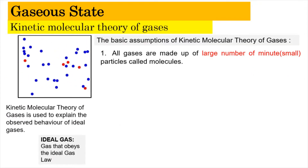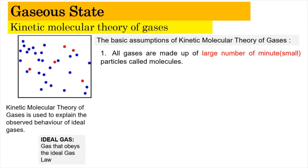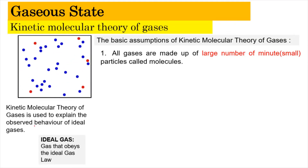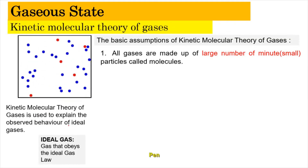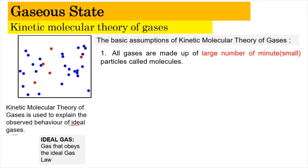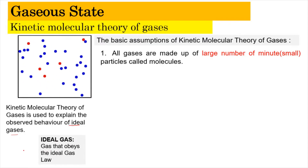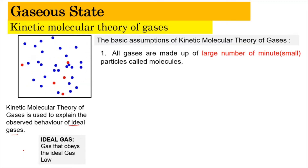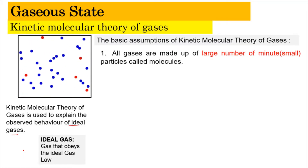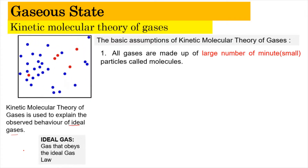The Kinetic Molecular Theory of gases is used to explain the observed behavior of ideal gases, where ideal gases obey the gas laws including Boyle's Law, Charles's Law, and Avogadro's Law. To understand how an ideal gas system works, we need to figure out a few key assumptions.